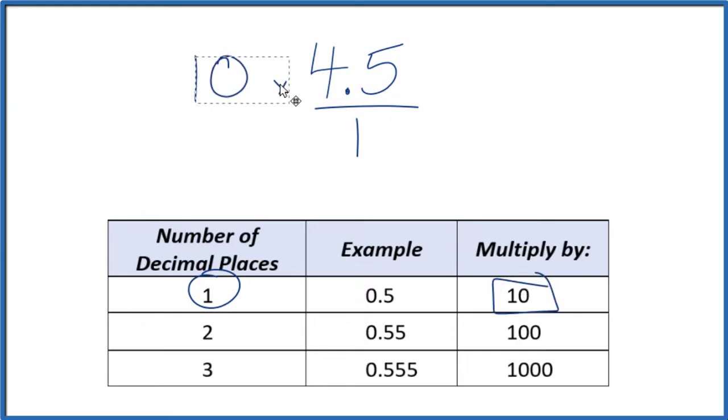So 10 times 4.5, that ends up giving us 45. So now we have a whole number. But we can't just multiply the numerator by 10. We also have to multiply the denominator by 10. That's because 10 over 10 is equal to 1. So we're multiplying by 1, and we're not changing the value, just the way it's represented.